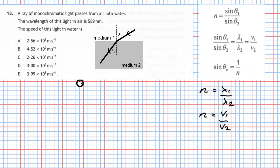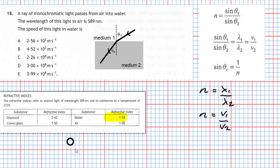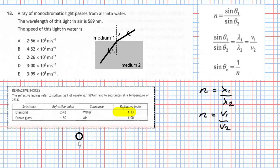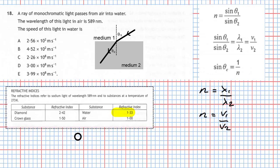If we go to our data sheet we'll see the refractive indices. The refractive indices refer to sodium light of wavelength 589 nanometers — that's the clue. So for that wavelength, the refractive index of water appears as 1.33. We now have the refractive index of water for this wavelength of light: n equals 1.33.